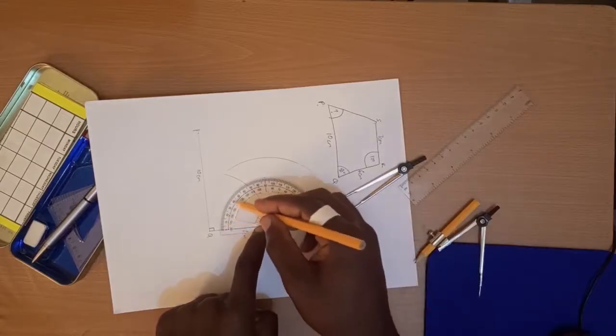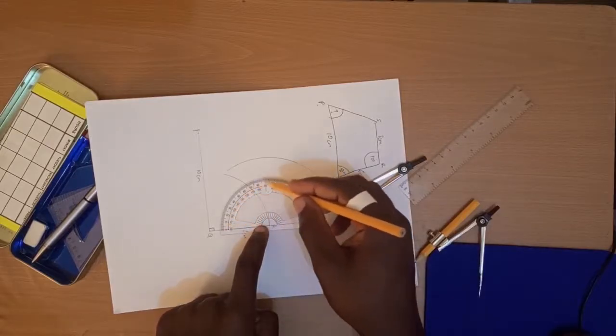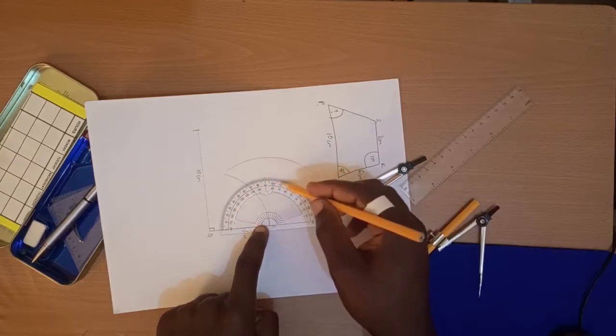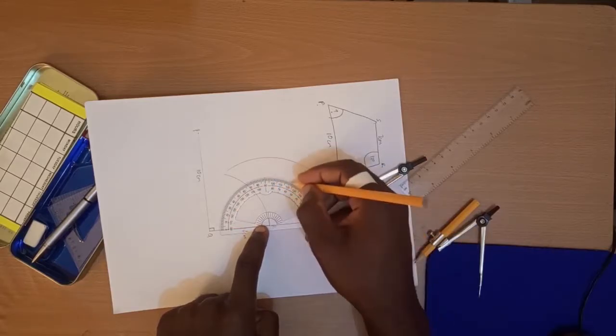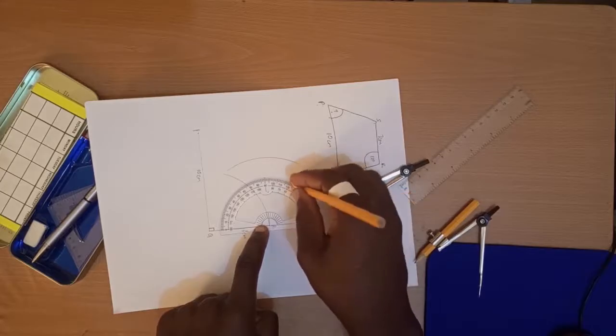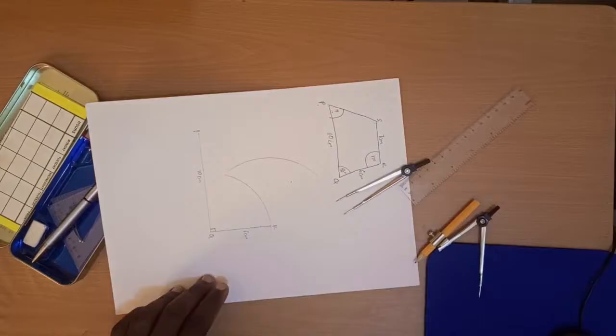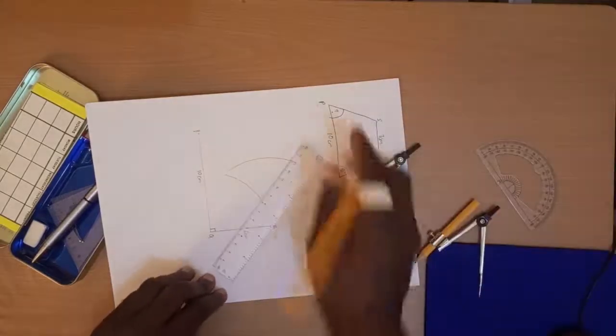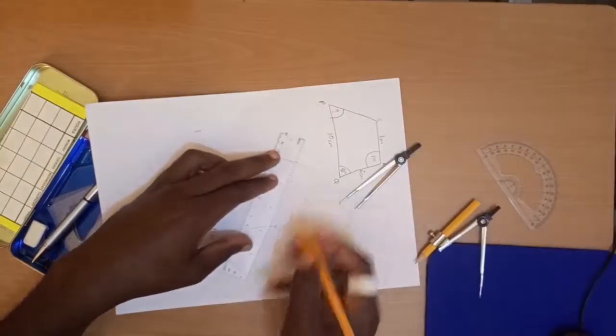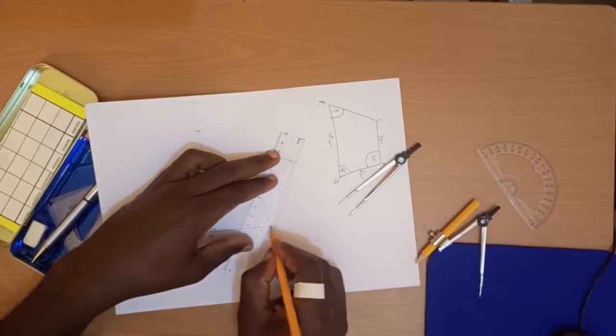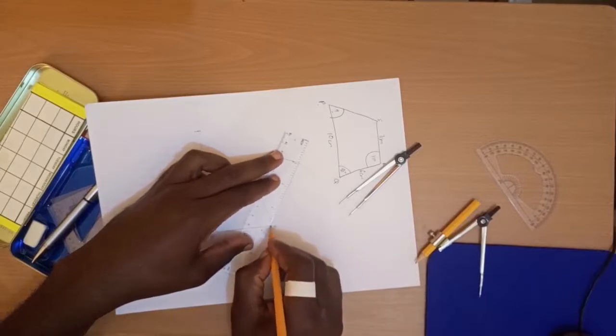Starting from 0, measuring up to 120 degrees. And so we connect with point R there. We're going to touch that arc.